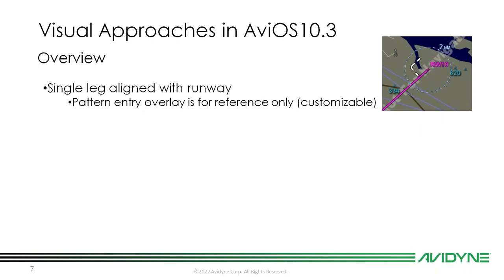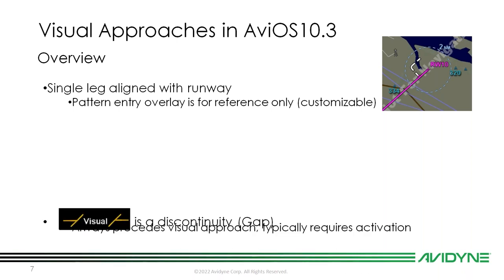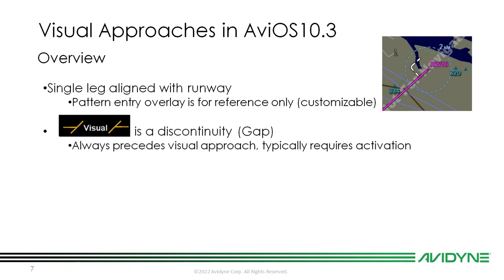What does a visual approach look like on the map? It's a single leg aligned with the runway. It has an overlay of a dashed white line for pattern entry, but that pattern entry overlay is for reference only — the FMS is not going to guide the autopilot for pattern entry. Essentially it's an extended runway centerline that extends about 20 miles, which becomes another leg in your flight plan.